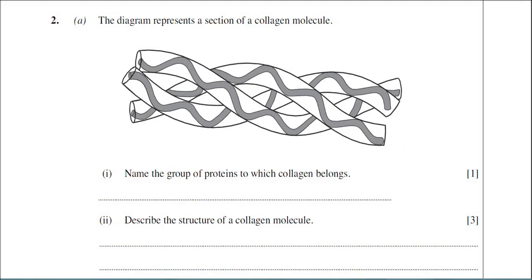We're looking at question number two now in the June 2010 BY-1 paper. This is a question dealing with both collagen and haemoglobin. As well as knowing the general structure of proteins and the primary, secondary, tertiary and quaternary structures of proteins, you do need to know the structure of collagen and haemoglobin in detail. Collagen is an example of a fibrous protein and haemoglobin is an example of a globular protein.